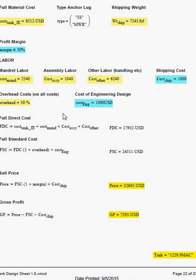The cost of engineering can be included. So finally, you have a full direct cost. A full standard cost. Which would include the overhead plus the engineering. And finally, a sell price. And then you can have your gross profit.